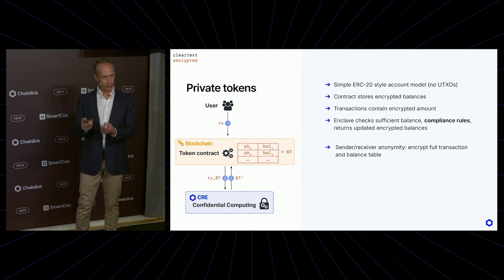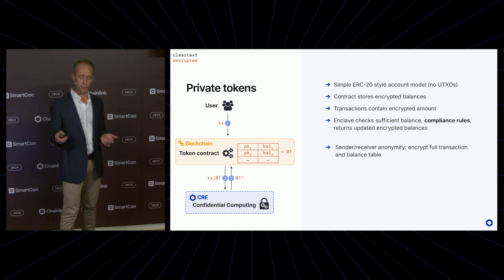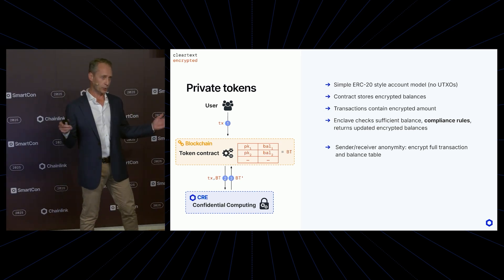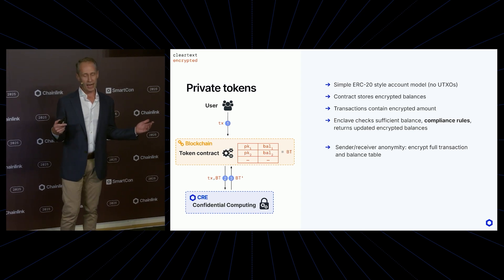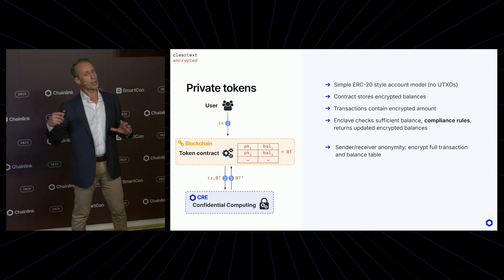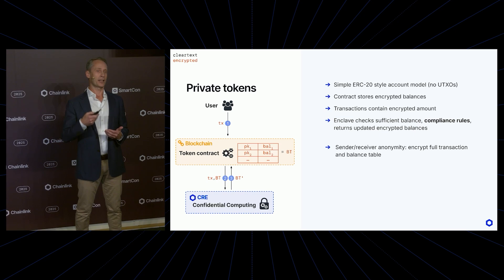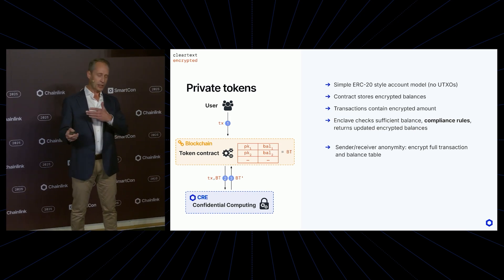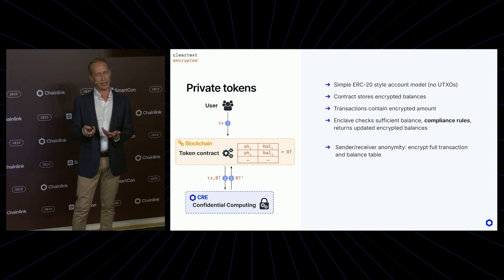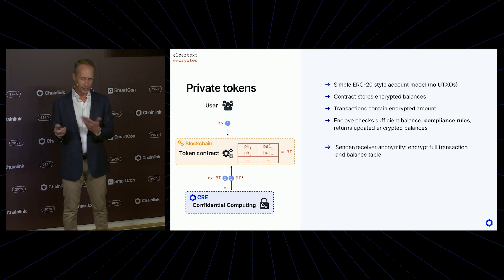This only hides the amount and encrypted balances. If on top of that you would also like to hide the identity of the sender and receiver, you can do that too. You can let users submit completely encrypted transactions that only get decrypted inside the enclave, and instead of encrypting separate balances, encrypt the whole balance table as one big blob that gets fed into Chainlink Confidential Compute, re-encrypted, and sent back on chain. There are further optimizations to avoid having too much data going between the blockchain and Chainlink Confidential Compute, but that's the basic idea.